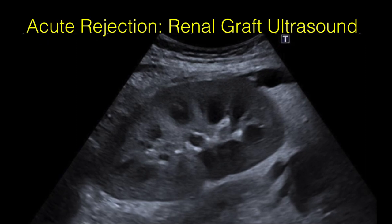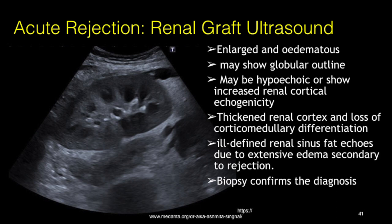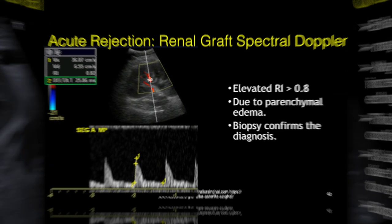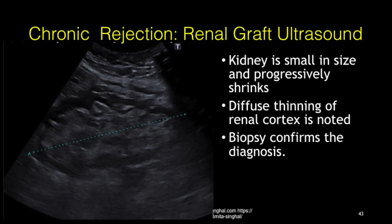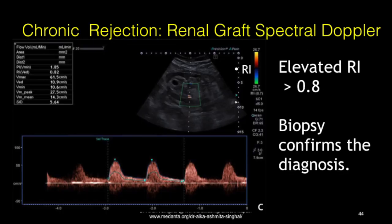Acute rejection: the kidney is enlarged and edematous, may show a globular outline, and may be hyperechoic or show increased renal parenchymal echogenicity. There is thickened renal cortex, loss of corticomedullary differentiation, and ill-defined central sinus echoes due to extensive edema. Biopsy will confirm the diagnosis. On spectral Doppler, findings are non-specific elevation of RI over 0.8. Chronic rejection: the kidney is small in size, progressively reducing and shrinking, with diffuse thinning of the renal cortex. Biopsy is again needed to confirm. On spectral Doppler, non-specific elevation of RI is seen over 0.8.